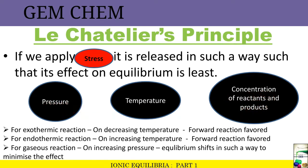For an exothermic reaction, when we decrease the temperature, the forward reaction is favored, since heat is being released. For an endothermic reaction, similarly, on increasing temperature the forward reaction is favored. For a gaseous reaction, on increasing pressure, equilibrium shifts in such a way as to minimize the effect.